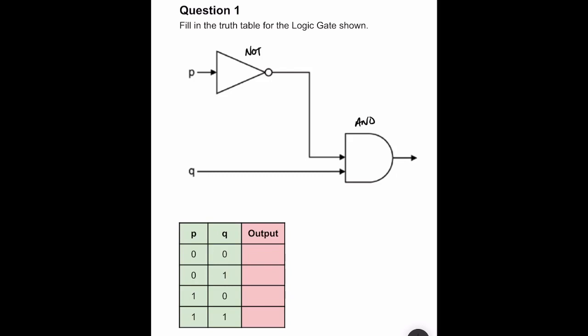The AND gate only produces a one if both inputs are one. So if we follow through the first scenario: P is zero and Q is zero. A zero going into the NOT gate produces a one, and that one goes into the AND gate. But the zero from Q also goes into the AND gate, and since both inputs aren't one, it produces a zero.